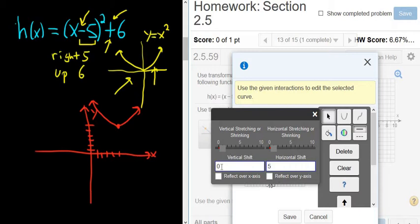We're going up 6. So when you go up and down, that's a vertical shift. So I'm going to put a 6 here. Okay, so we went up 6. That's a vertical shift because vertical is up and down. We went right 5. That's a horizontal shift because horizontal is left and right.